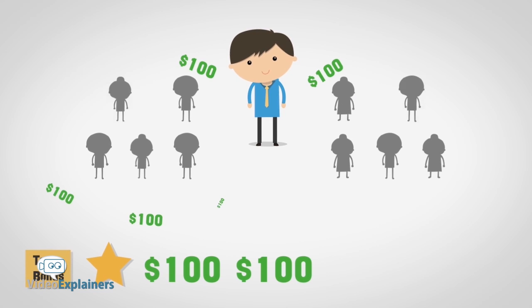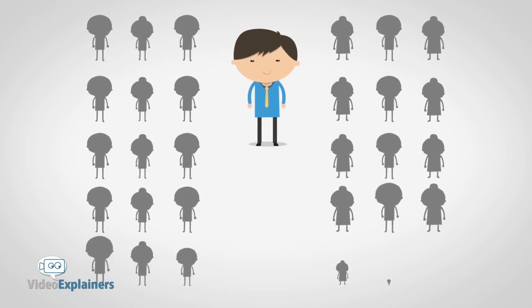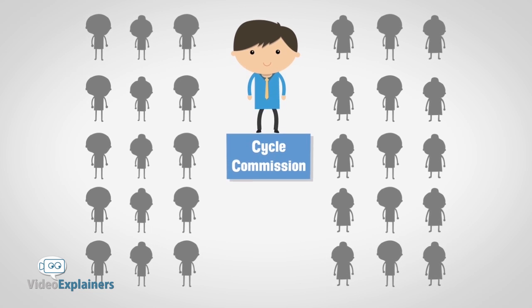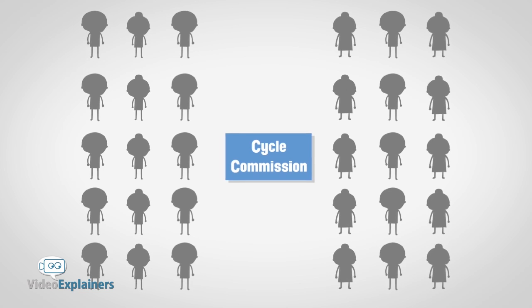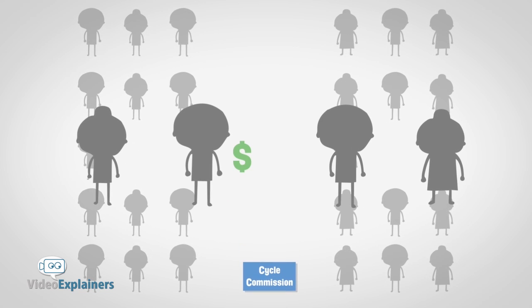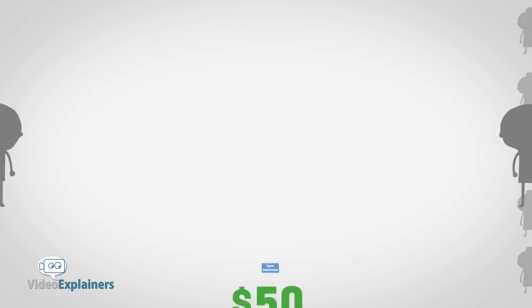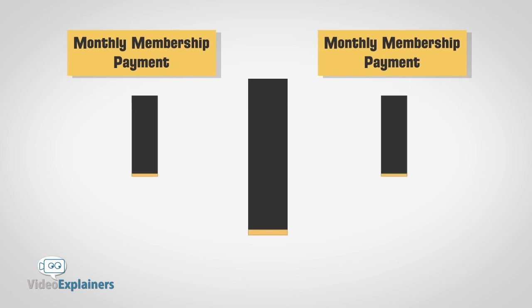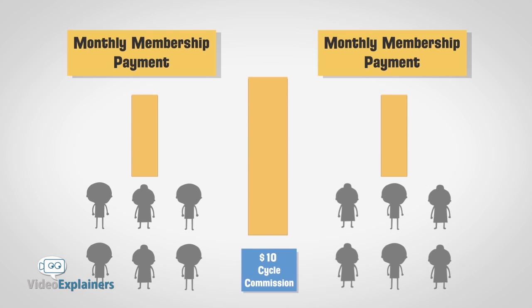As your two teams begin to grow, you will be rewarded cycle commissions which are paid out each week. For every two affiliates that join your left team and two that join your right team, you will earn a $50 cycle bonus. And it doesn't matter if you have sponsored them or not. For every two matching payments of monthly membership on your left and right team, you will earn a $10 residual cycle bonus.